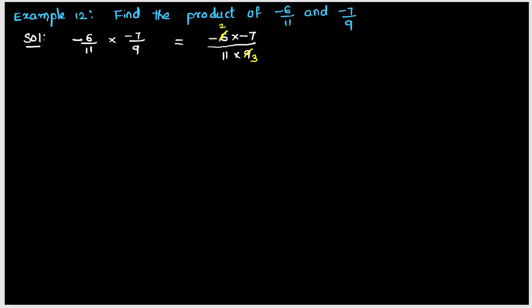And if you observe 7, 9, 11, they do not have common factor, so you will leave them as it is. Then we get minus 2 multiplied by minus 7 upon 11 multiplied by 3. So you get minus into minus, that is positive, plus. 2 times 7 are 14 upon 11 times 3 are 33. So this is the product of minus 6 by 11 and minus 7 by 9.